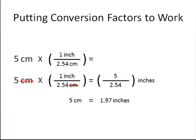So let's put that conversion factor to work. Let's say someone tells us that we have 5 centimeters, and we want to convert that into inches. So we use the conversion factor that we had on the previous slide, 1 inch divided by 2.54 centimeters, which is equal to 1. That cancels out the centimeters, and we're left with the unit of inches. So 5 centimeters equals 1.97 inches.